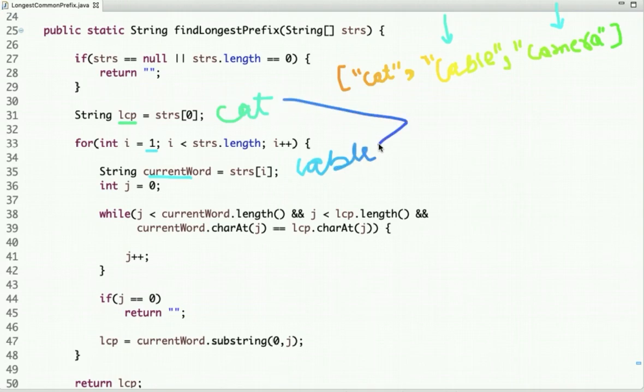And then I am first finding the common prefix between these two strings. So if you see this condition, I'm running a while loop and I have declared one variable j which has initial value of 0. And then here I am checking the value of j should be less than the length of this word as well as the length of this word. The reason being that both the strings may or may not be of equivalent length. So if you see the length of this string is 3 and the length of this string is 5, so both the strings are of unequal length.